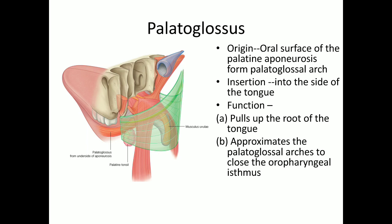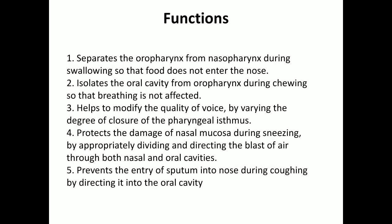The palatoglossus originates from the palatine aponeurosis and forms the palatoglossal arch, inserting on the side of the tongue. As it is attached to the tongue, it pulls the root of the tongue upward. It forms the palatoglossal arch, which is the anterior boundary of the tonsillar fossa, and helps in closing the oropharyngeal isthmus.